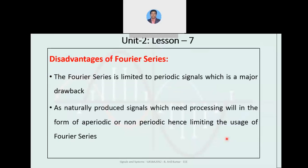Coming to the disadvantages that we have from Fourier series, which I have already discussed — from the Fourier series summary we can conclude some disadvantages which are listed as shown. The Fourier series is limited to periodic signals. As already mentioned, all the formulas we have discussed earlier are for periodic signals only, which is a major drawback. Naturally produced signals which need processing can be periodic or non-periodic.